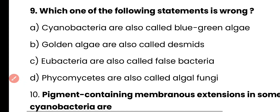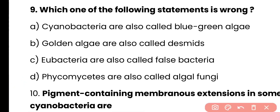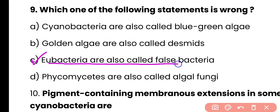Question number 9. Which of the following statement is true? Cyanobacteria are also called blue-green algae; golden algae are also called desmids; eubacteria are also called false bacteria; or phycomycetes are also called algal fungi? Correct answer is option C. Eubacteria are also called false bacteria.